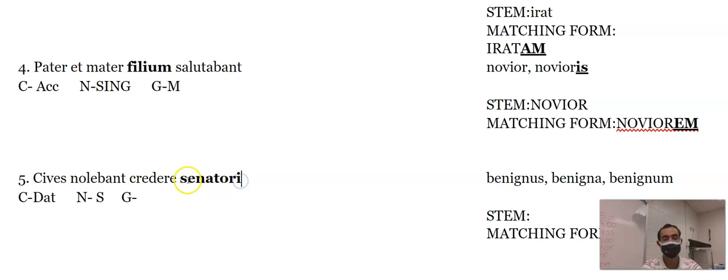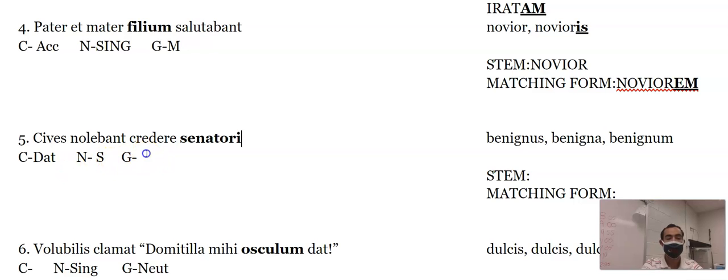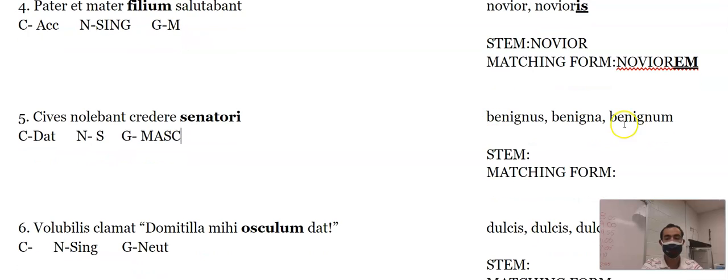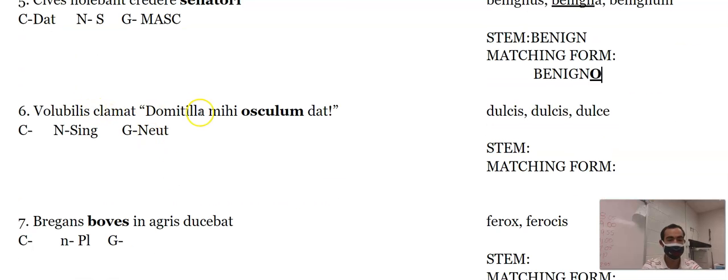Senatores, this is a word we didn't learn in Latin one because we didn't get to it. But senatores is a senator, and the gender of a senator is masculine in ancient Rome. Benignus is our adjective. It's got an a, so that means it's one and two. So I take benignus, and we've got to make a dative, singular, masculine. I'm going to use the second declension, so it's benigno with an o.